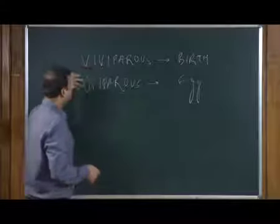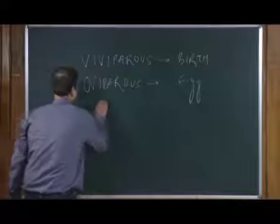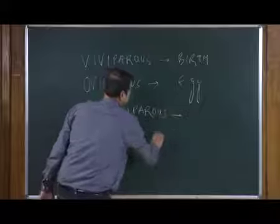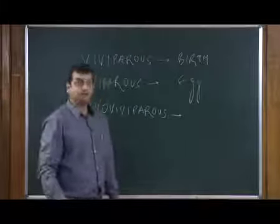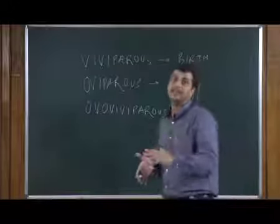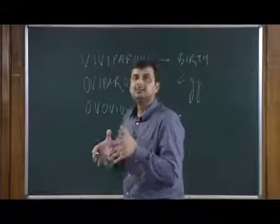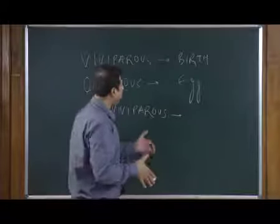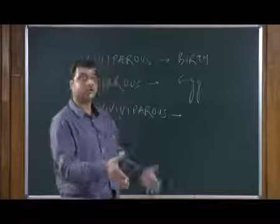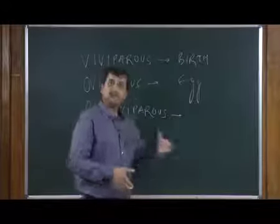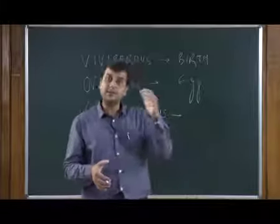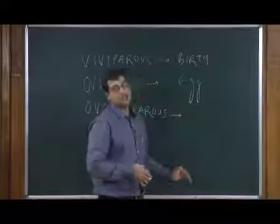We also have a mixture of these two, which we call ovoviviparous. In ovoviviparous animals, they are egg-laying animals, but the egg is not laid as such — the egg gets developed inside the body and the young ones are hatched out and come out from the body. So basically they are egg-bearing animals; the egg matures inside the body and they give birth to young ones.